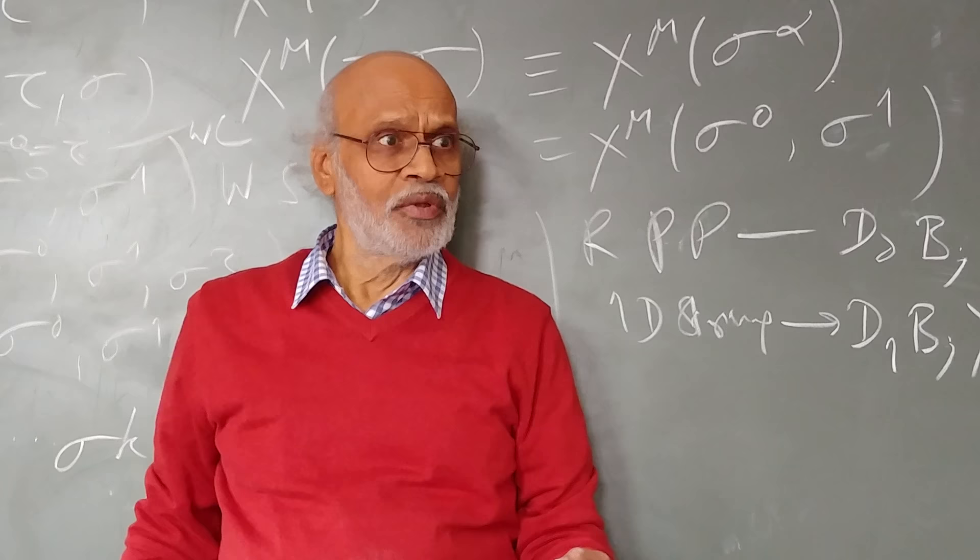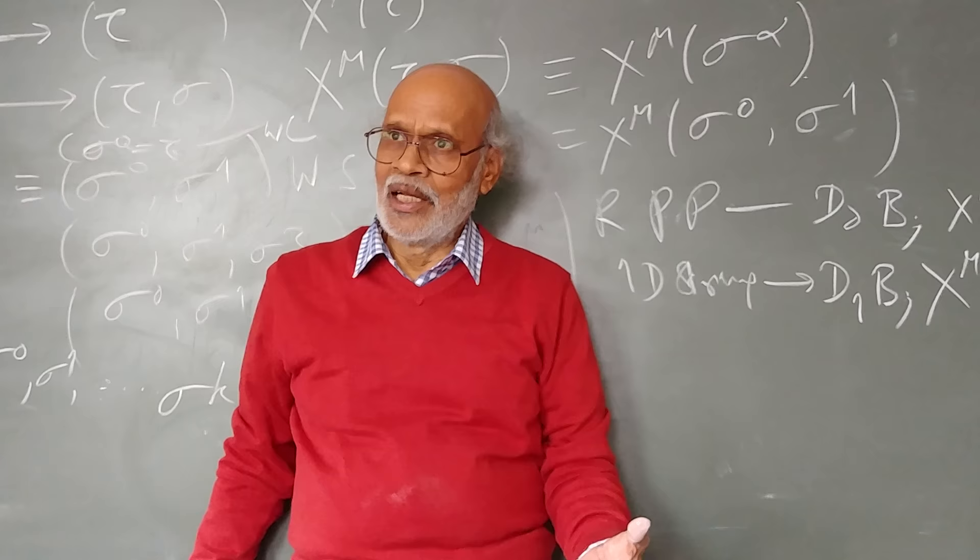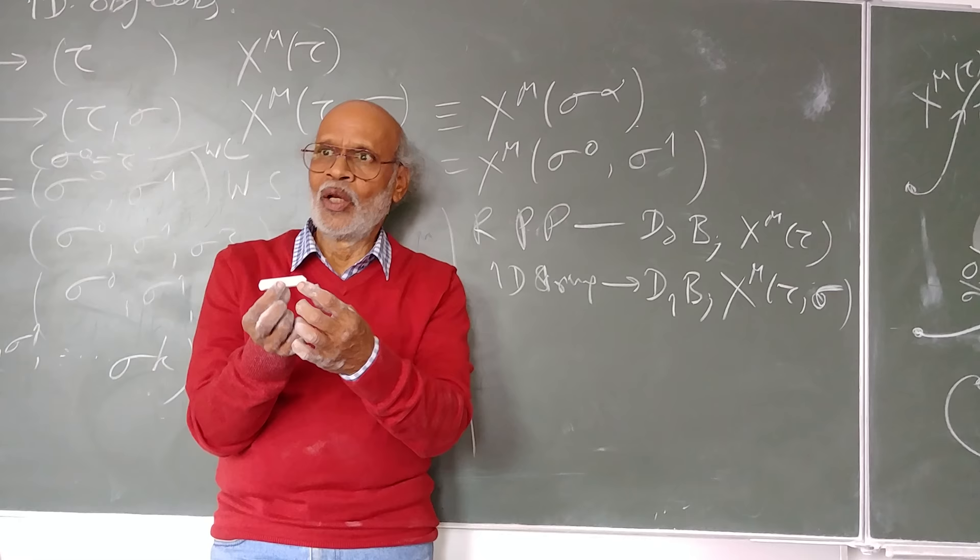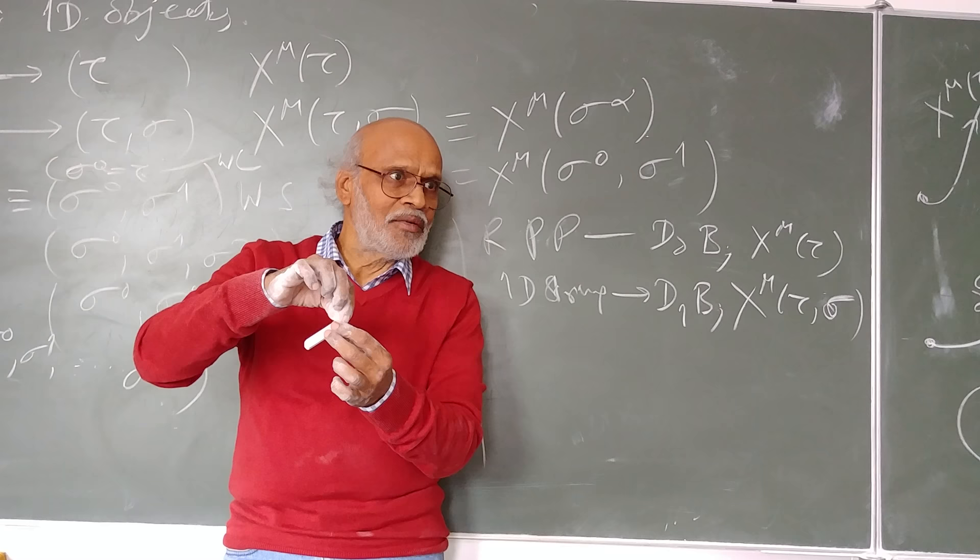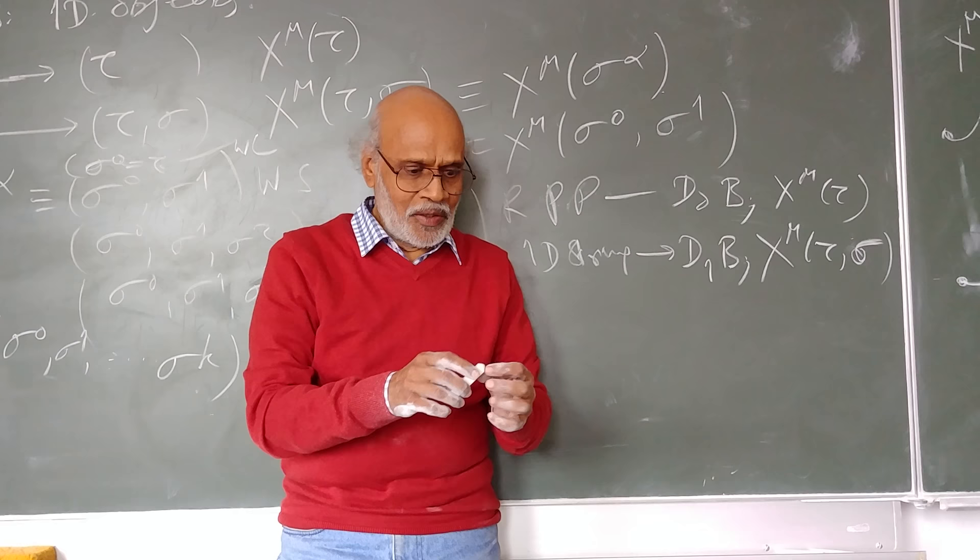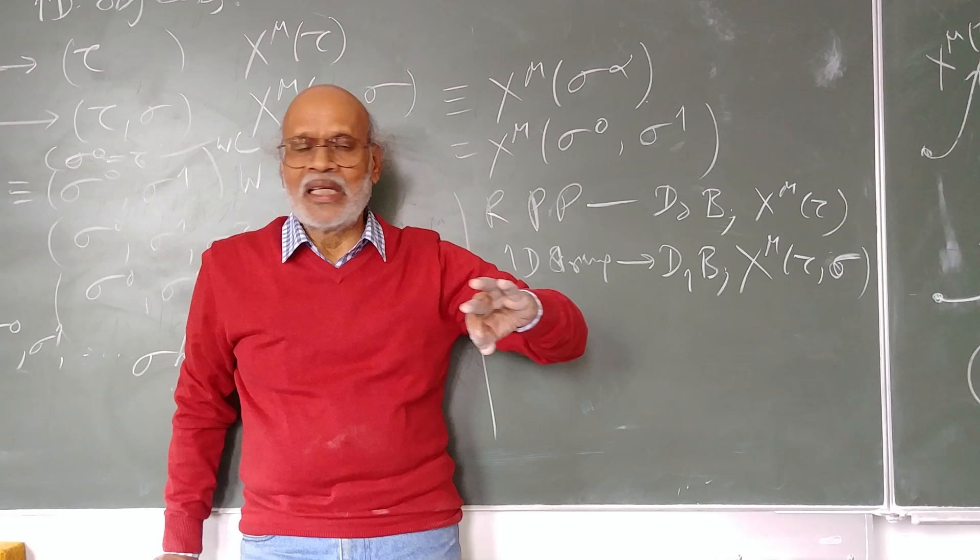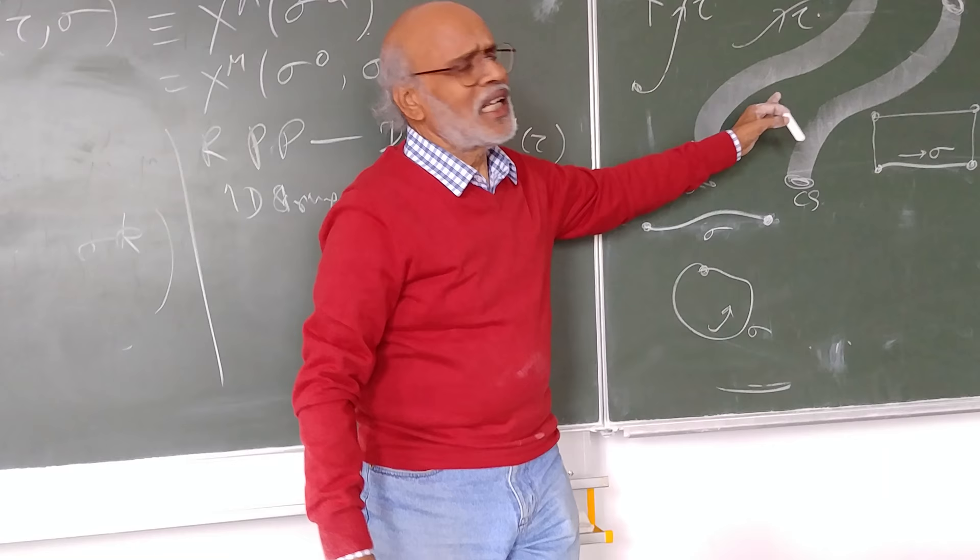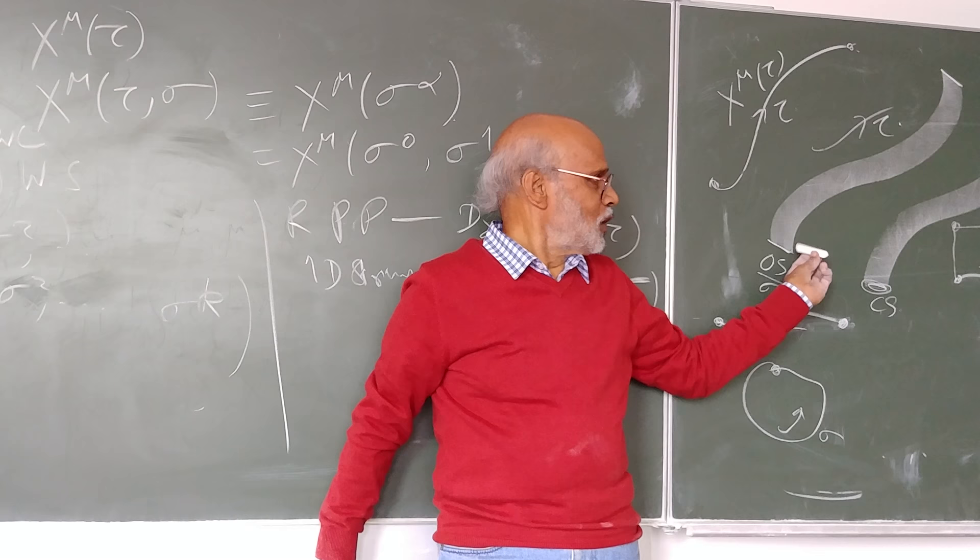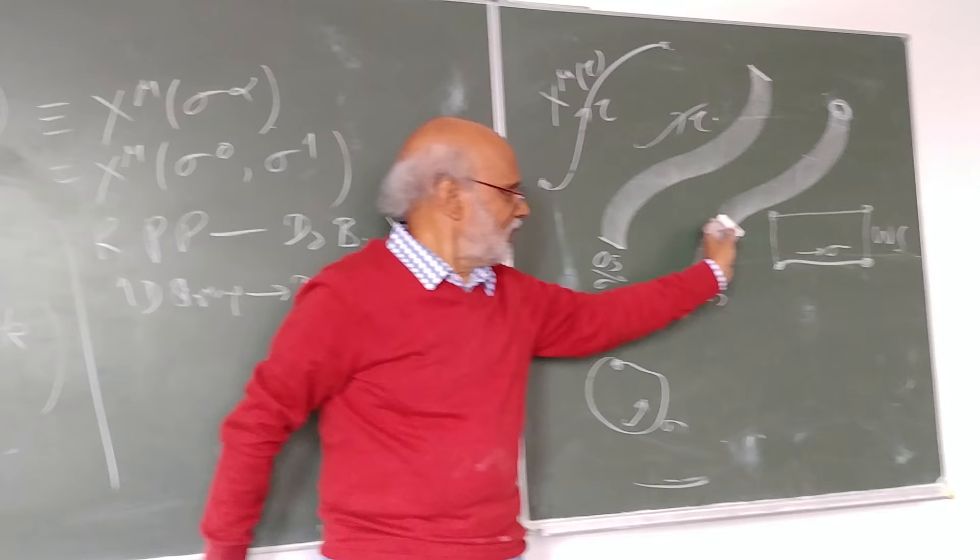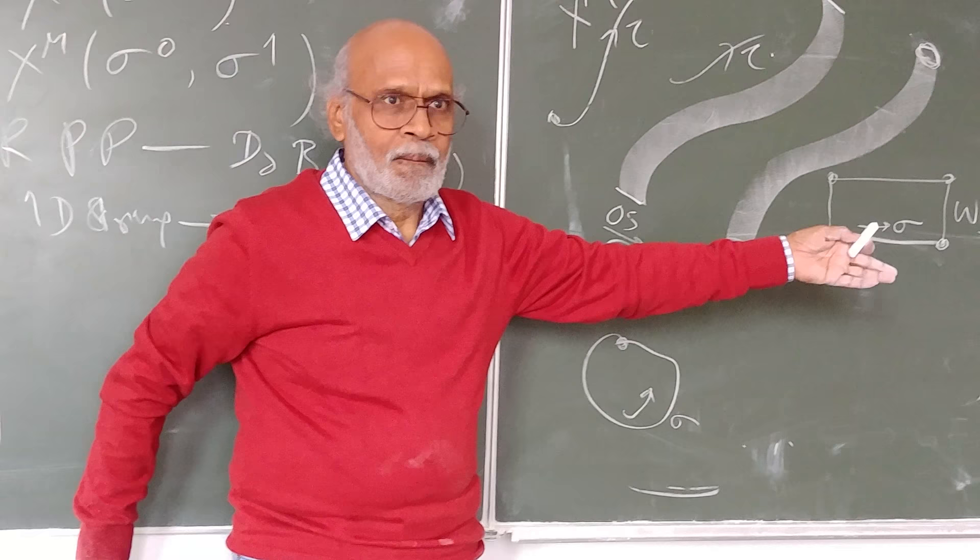We have two kinds of these strings: open with both ends free like this, or a closed string which is a loop - one end comes back onto itself. Obviously if I have a loop here and it propagates in spacetime, it's going to describe a tube of some kind. Open strings will sweep out worldsheets - these are imaginary surfaces. An open string will sweep out a worldsheet. For a closed string it would be a tube.